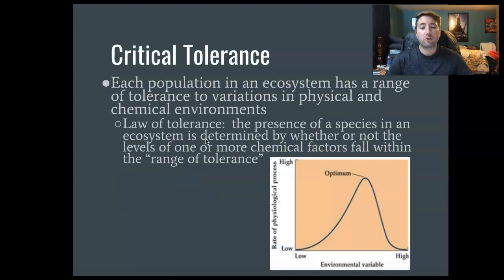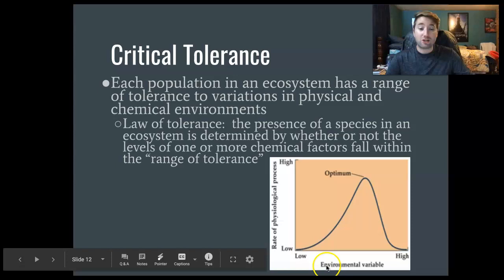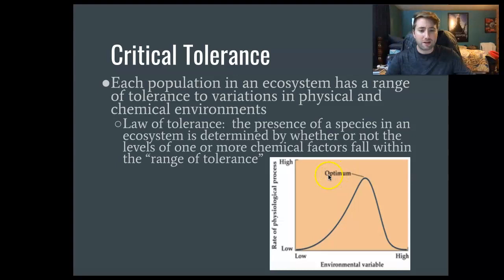Let's talk about critical tolerance. Each population in an ecosystem has a range of a certain abiotic factor that they like to be in — for example, temperature. If the temperature is really, really high, there aren't going to be a lot of organisms. If it's really, really low, there also won't be many. It's kind of like a normal distribution curve where the peak is the optimum — where everyone wants to be. The law of tolerance states that the presence of a species in an ecosystem is determined by whether the levels of one or more factors fall within its range of tolerance.